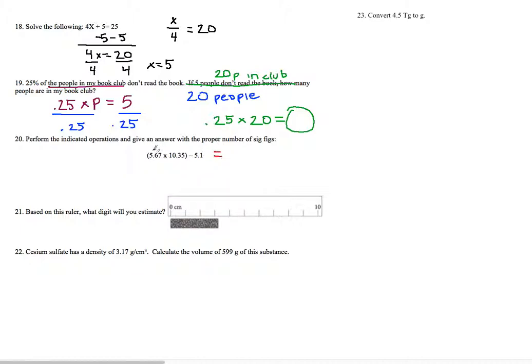So since I'm multiplying, I need to use the fewest number of sig figs. So this is 1, 2, 3. This is 1, 2, 3, 4. So my final answer should have 3. So this should be 58.7 up top.